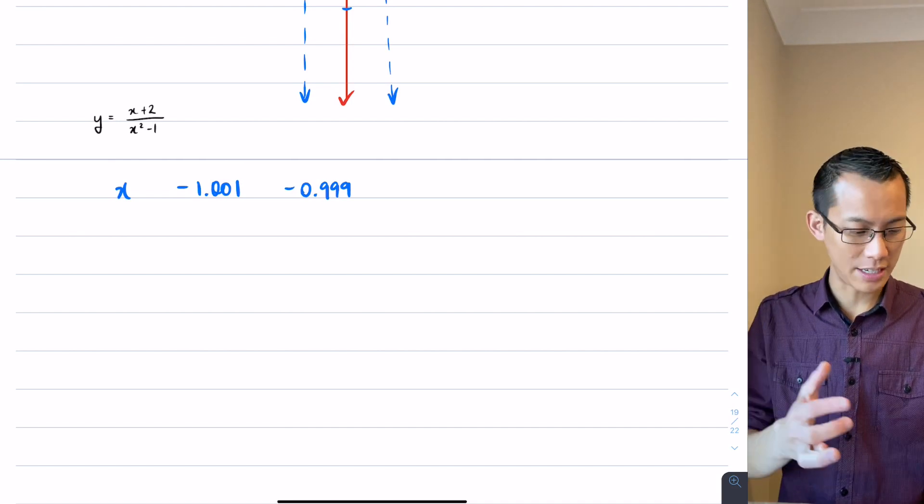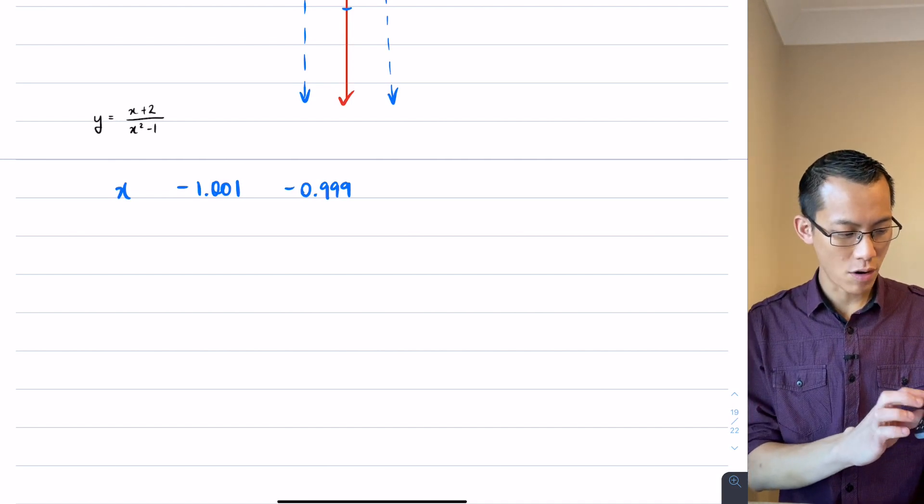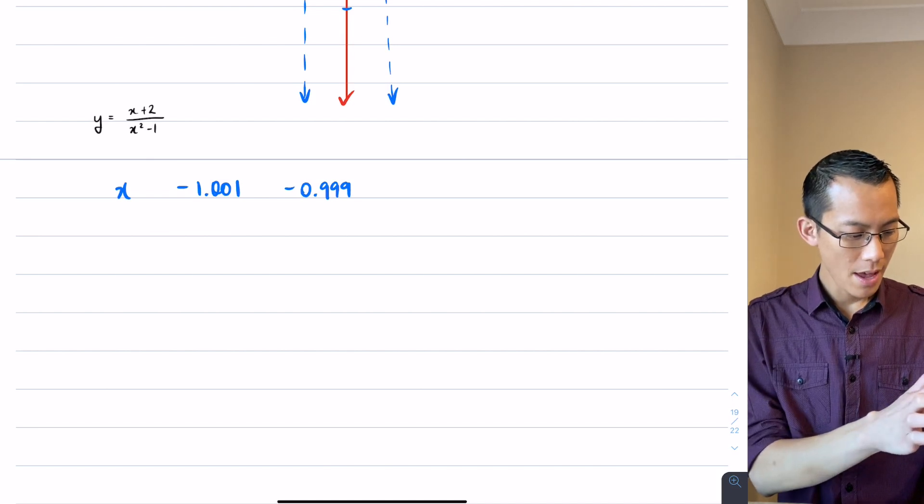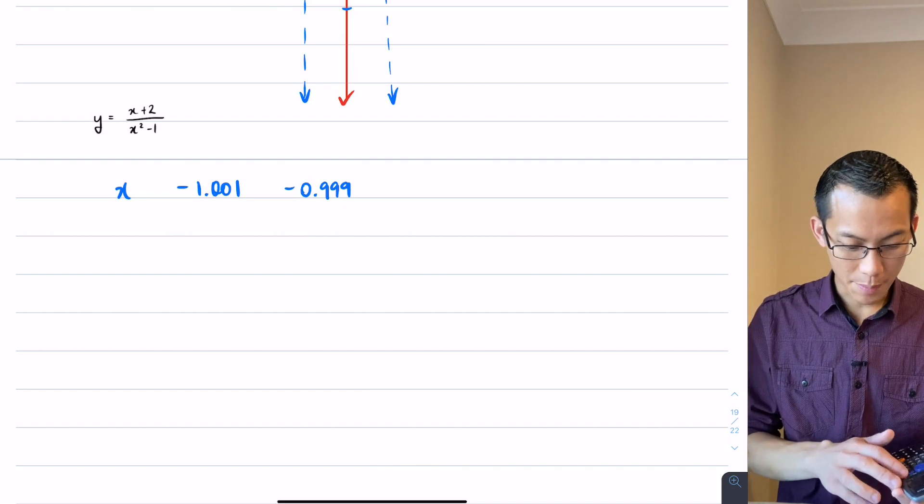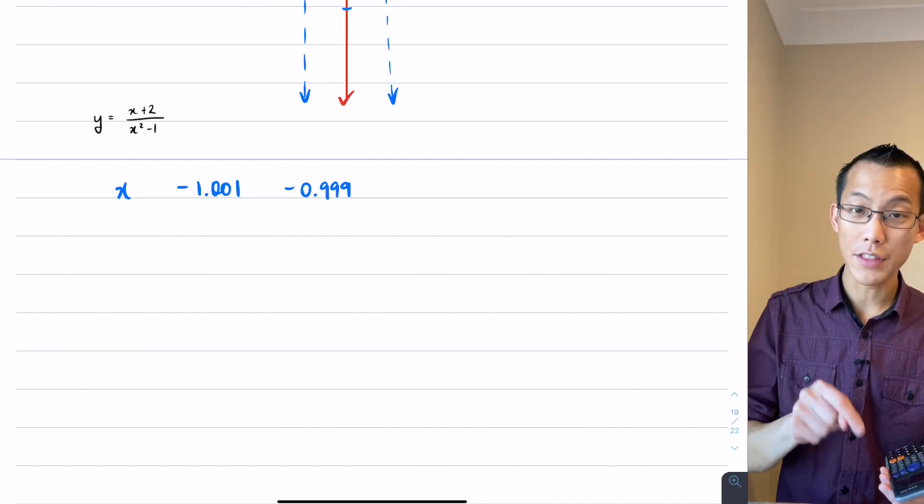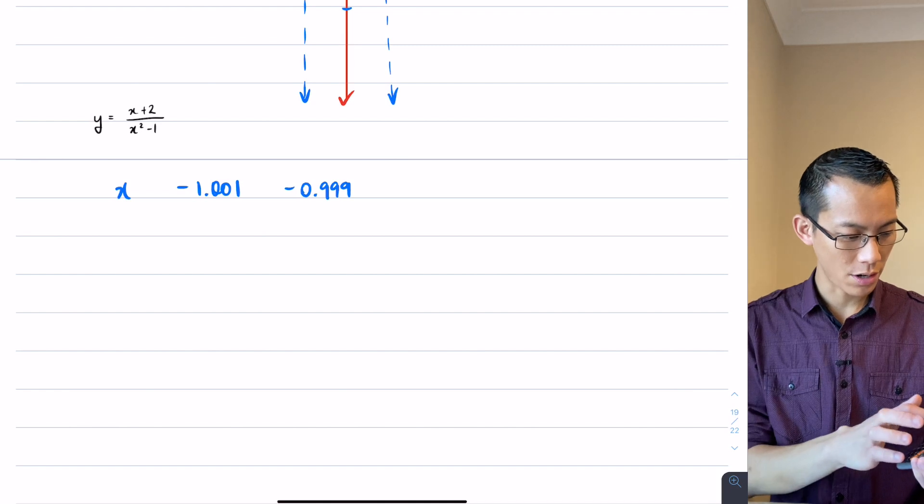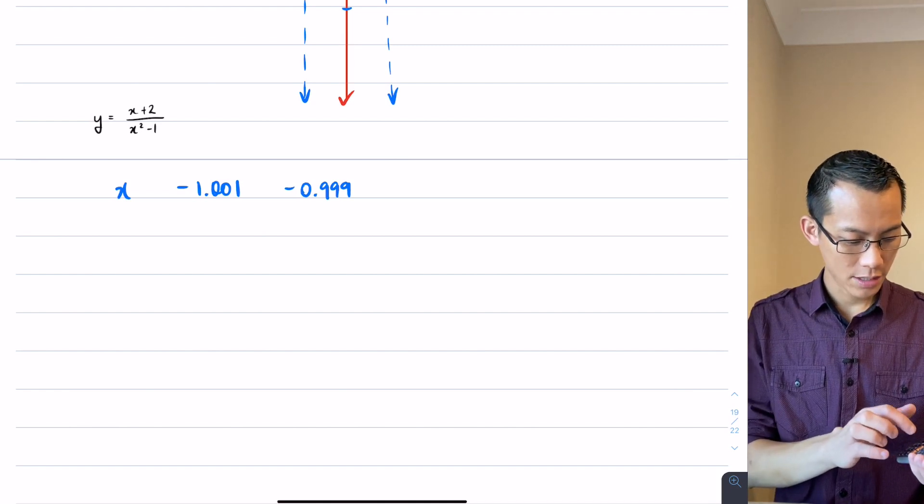But I'm going to take that negative 1.001 and I'm going to store that in as x. And then what I'll do is I'm going to evaluate x plus 2 on x squared minus 1 for this particular value. So I'm going to go x plus 2 on the top and then x squared minus 1 on the bottom.